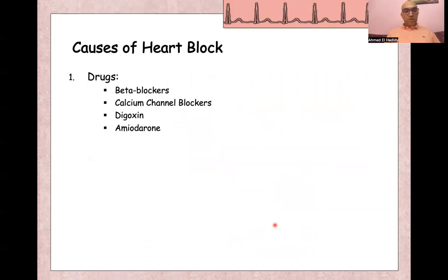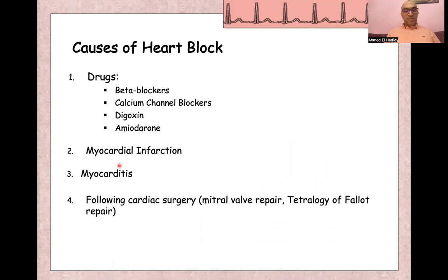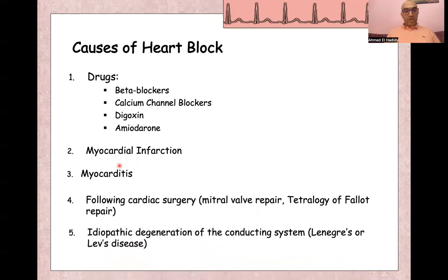Causes of heart block include drugs such as beta blockers, calcium channel blockers, digoxin, and amiodarone. Myocardial infarction — both anterior and inferior — can cause heart block, as can myocarditis. It can also follow cardiac surgery such as mitral valve repair or tetralogy of Fallot repair. Sometimes it is idiopathic or due to inherited degeneration of the conducting system, such as Lenegre-Lev disease.